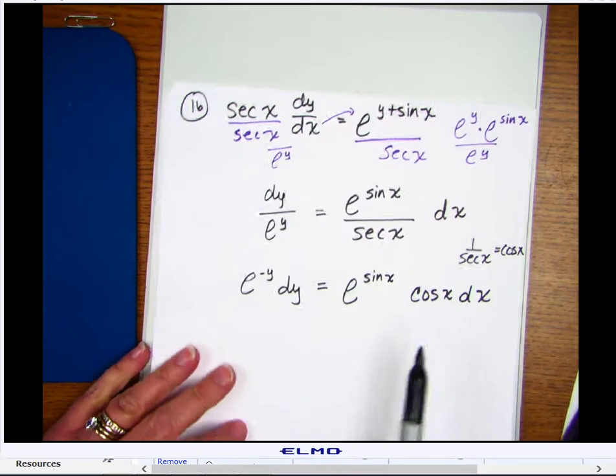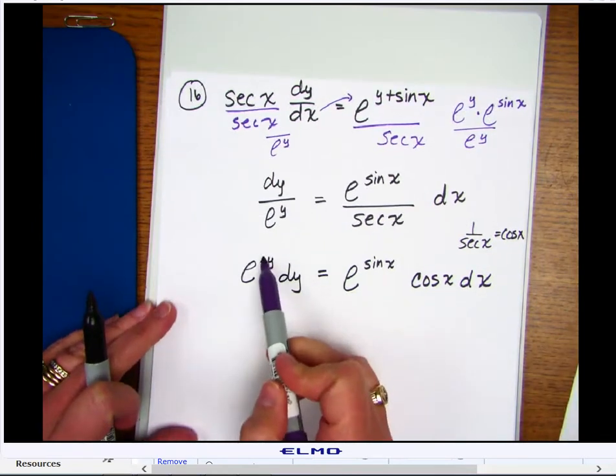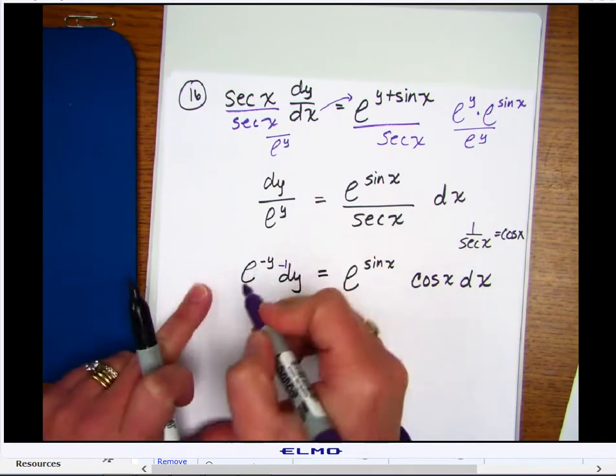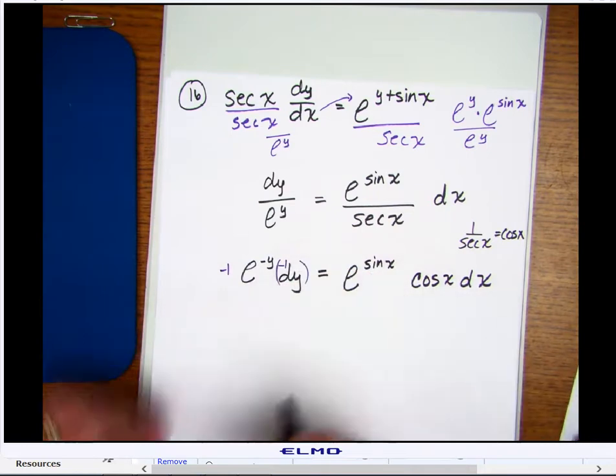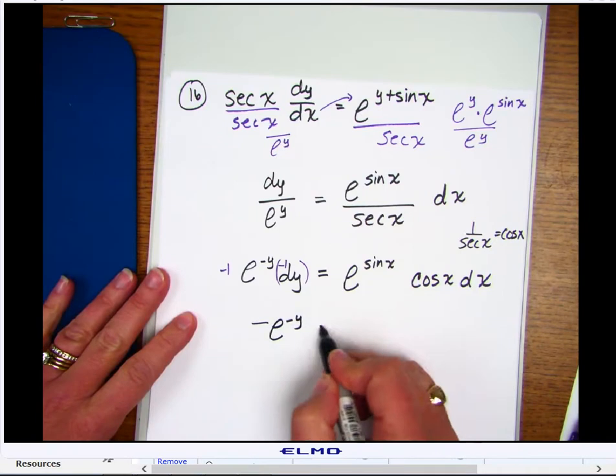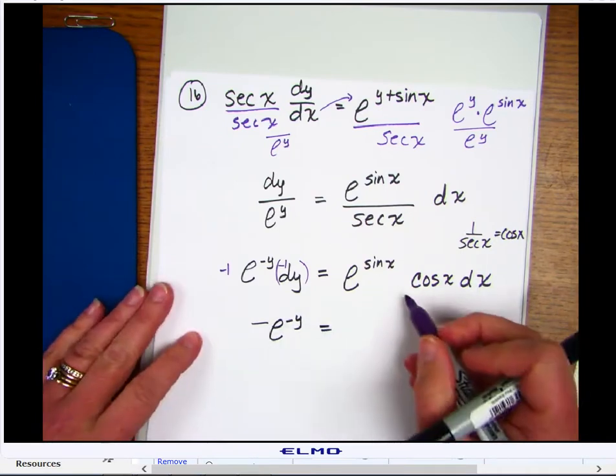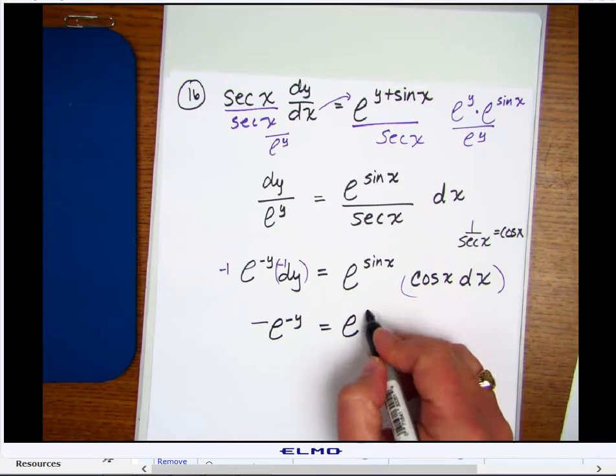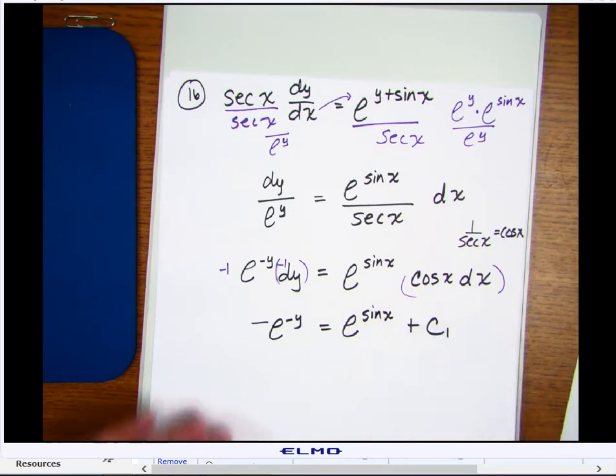And now, to integrate e to the x, it's just e to the x, but we need to have the derivative of this part. So the derivative of minus y is negative 1. So we need to multiply by a negative 1 here. So when I integrate this, it's going to be minus e to the minus y. And the derivative of sine is cosine. So this is going to be my derivative here. So the integral of e to the sine of x is just e to the sine of x. And then, plus some constant.